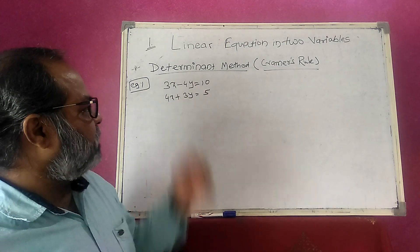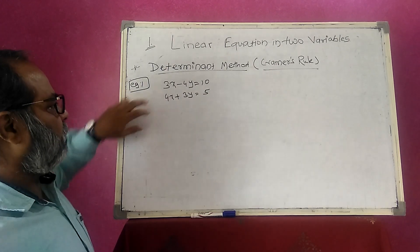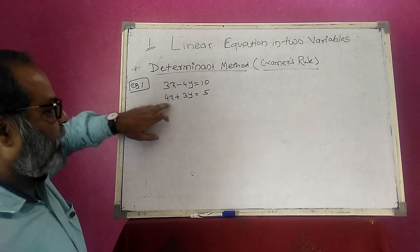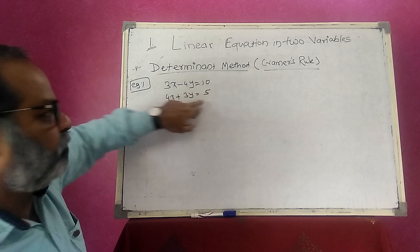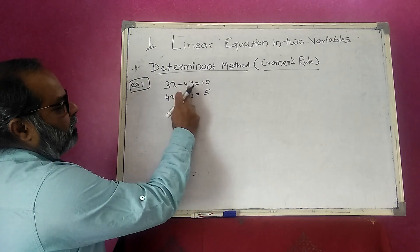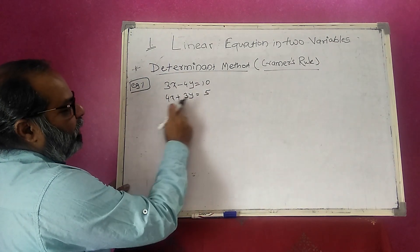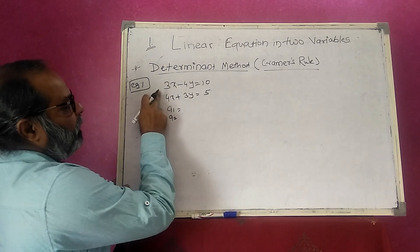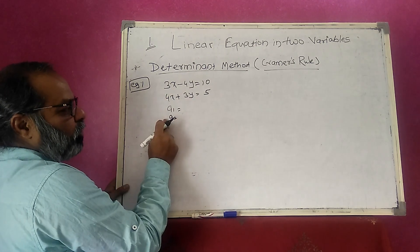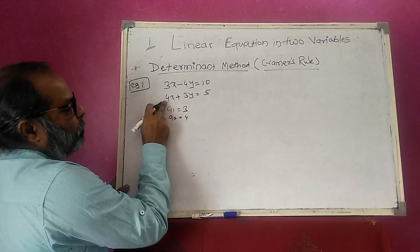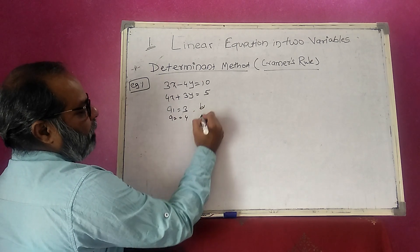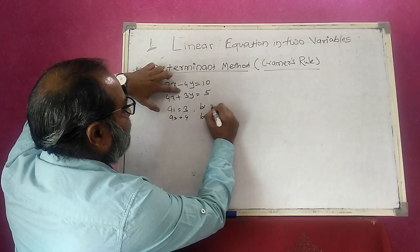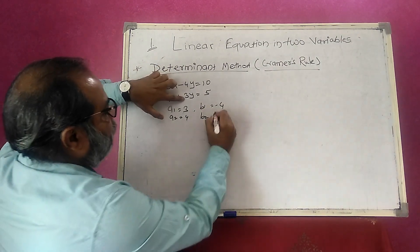Now solving by Cramer's Rule. The equations are 3x minus 4y equals 10 and 4x plus 3y equals 5. So a₁ = 3, a₂ = 4, b₁ = minus 4, b₂ = 3, c₁ = 10, c₂ = 5. Remember: the constant must always be on the right-hand side.